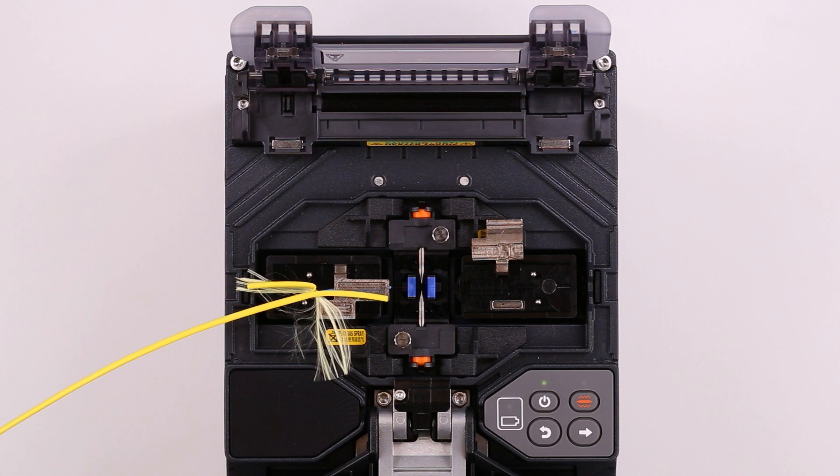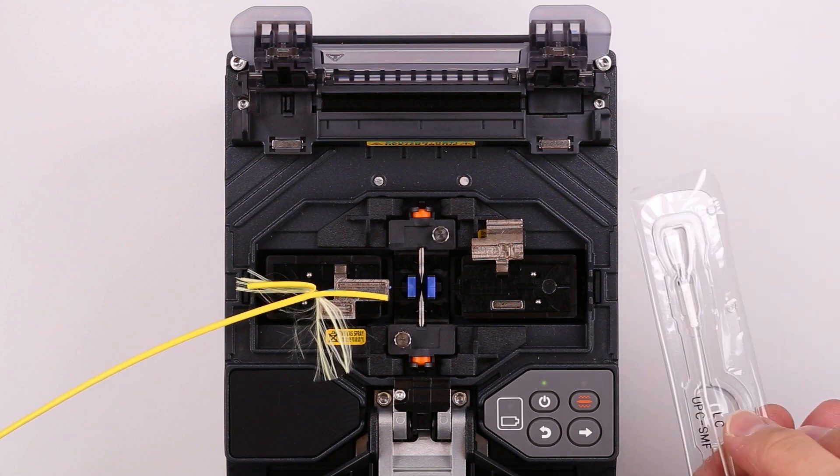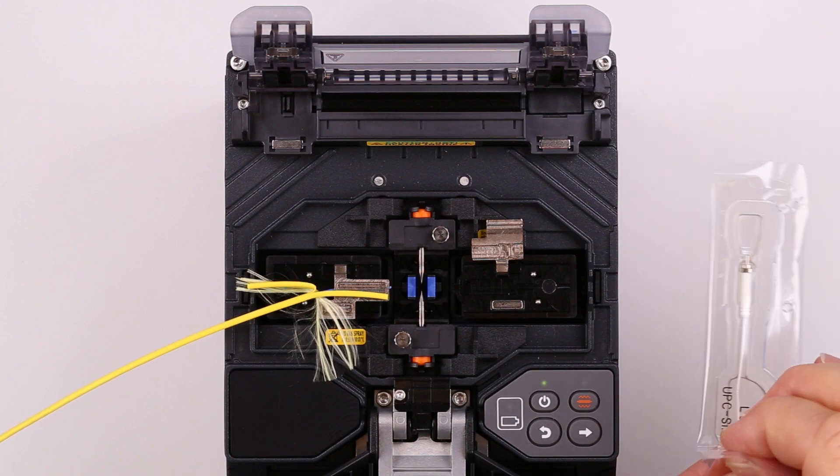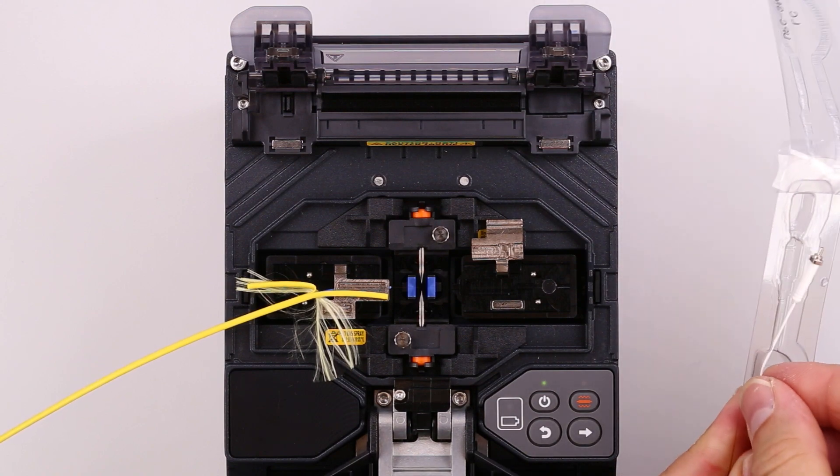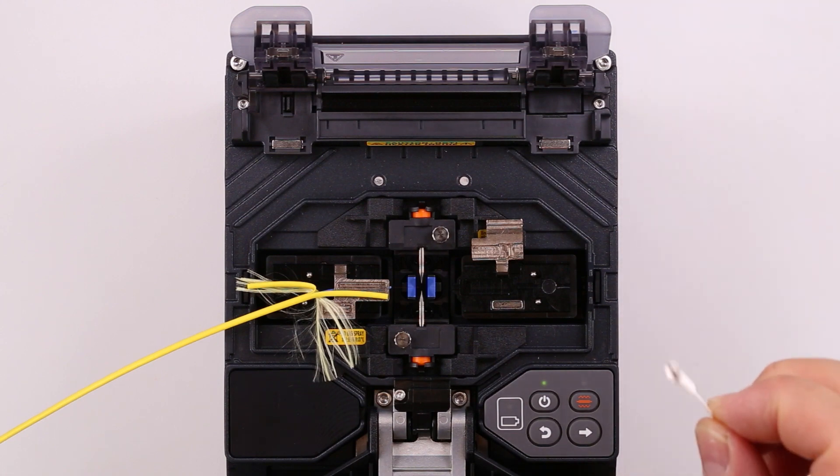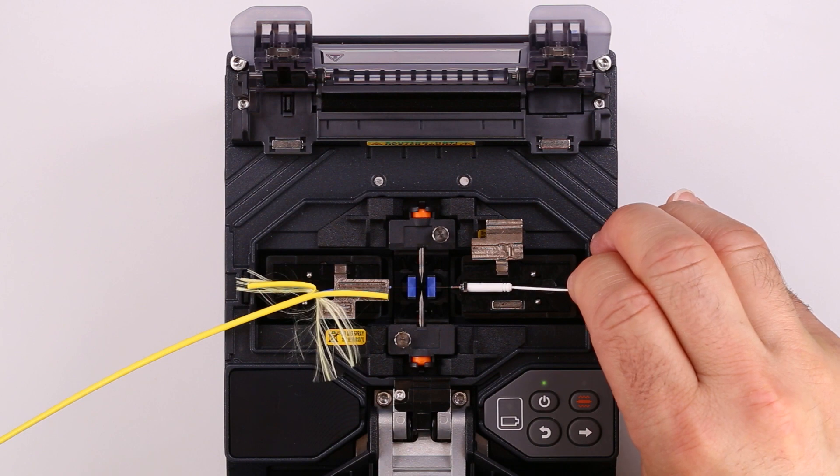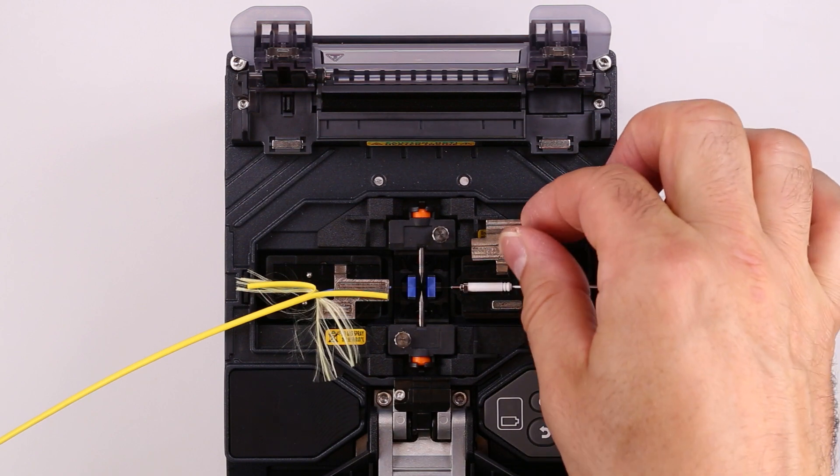Make sure the ferrule holder lid on the QuickFuse installer is open. Then open the ferrule sub-assembly package. Make sure to never touch the fiber. Use the white handle to move the ferrule sub-assembly into the installer. Then close the ferrule holder lid.